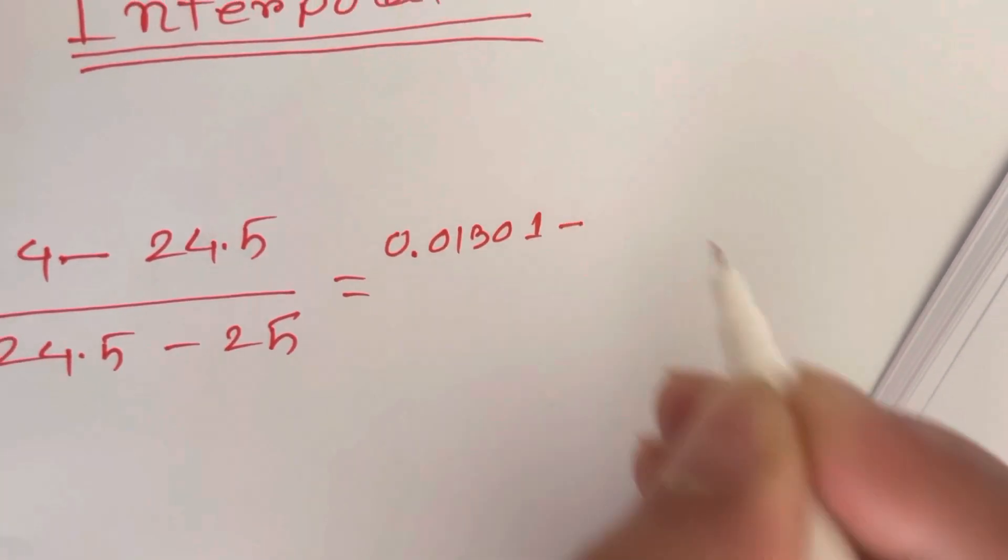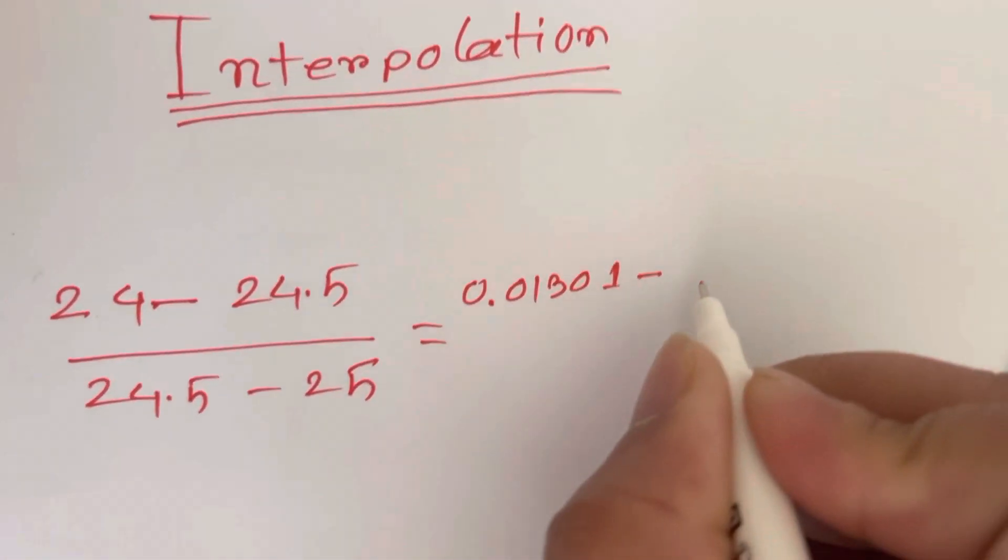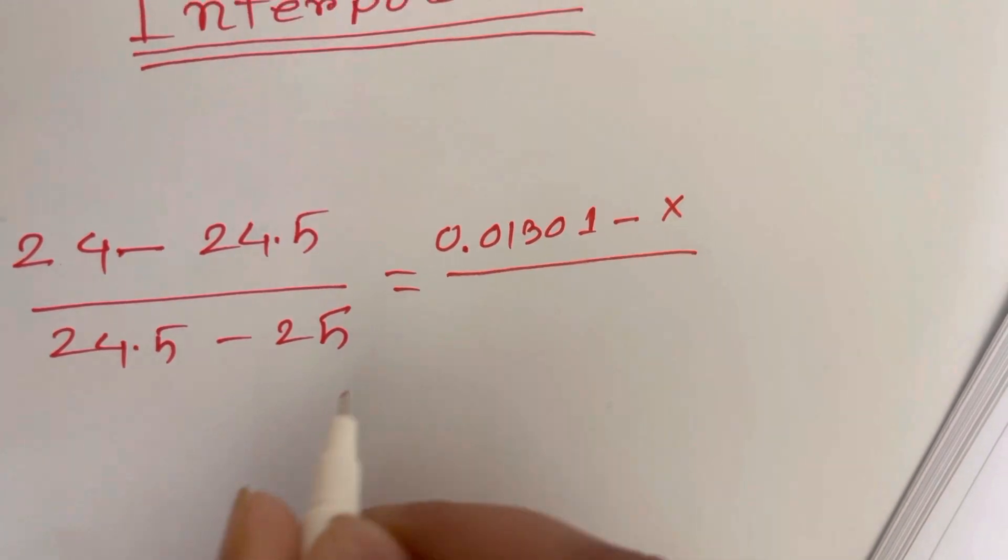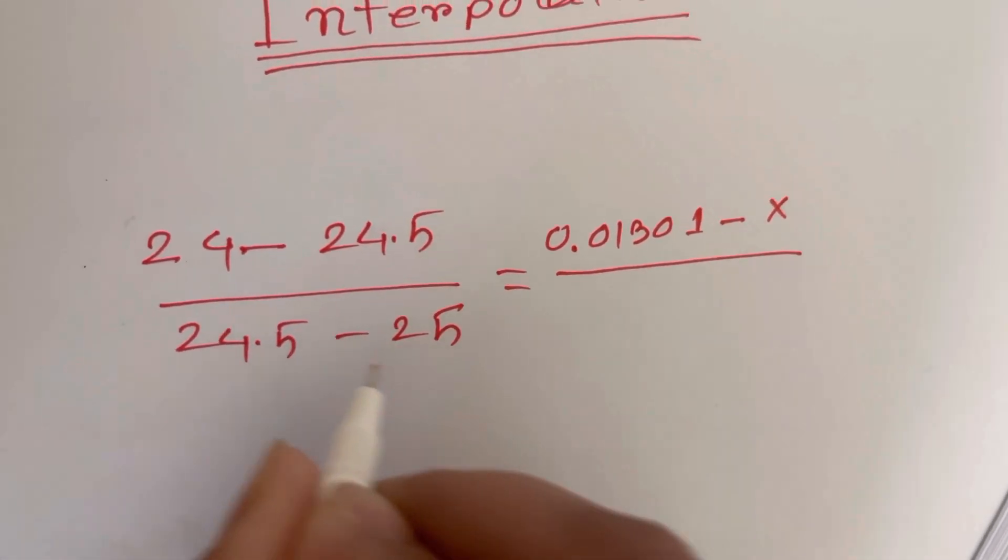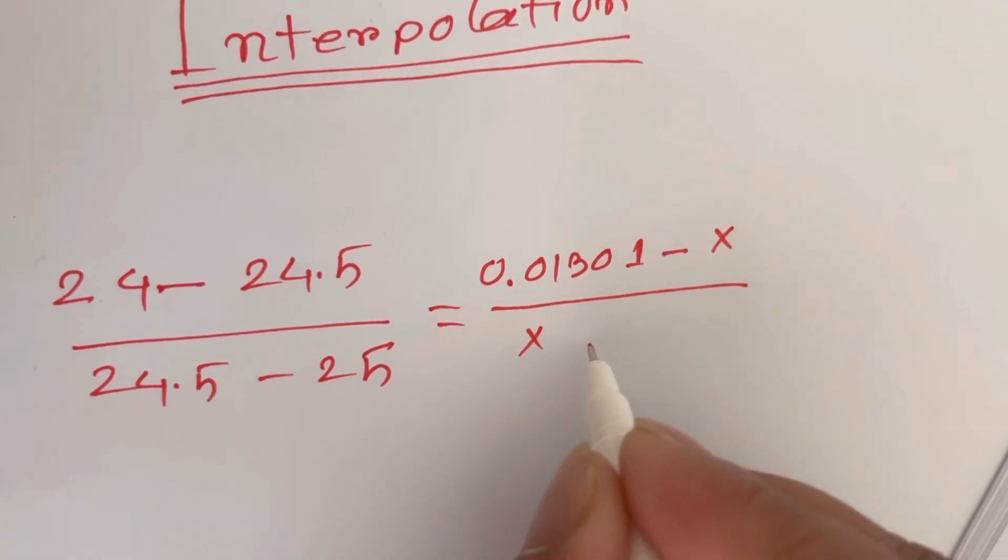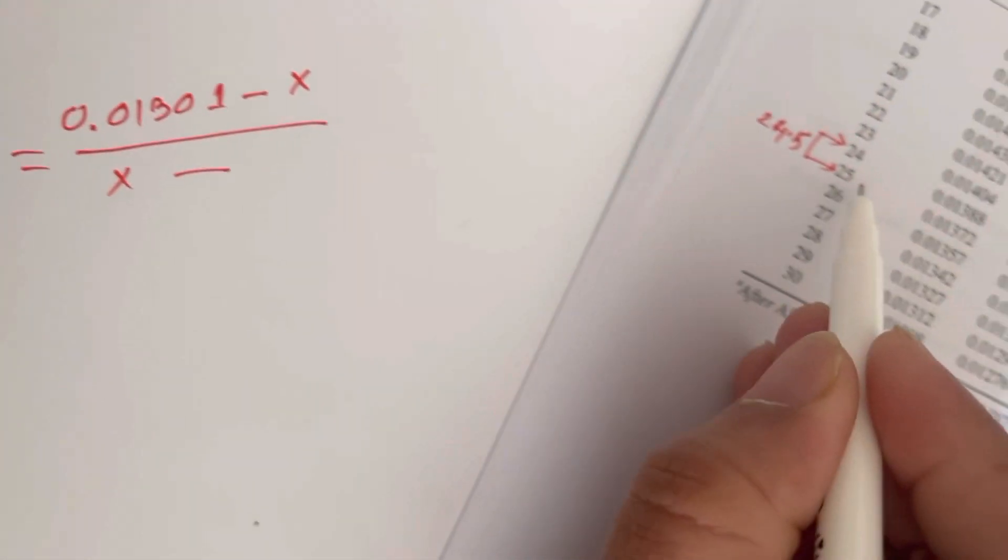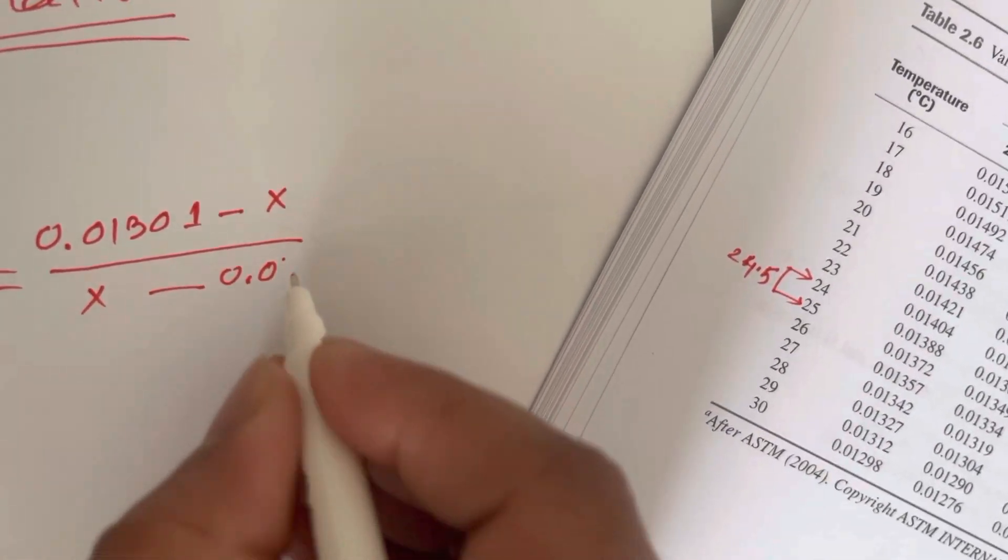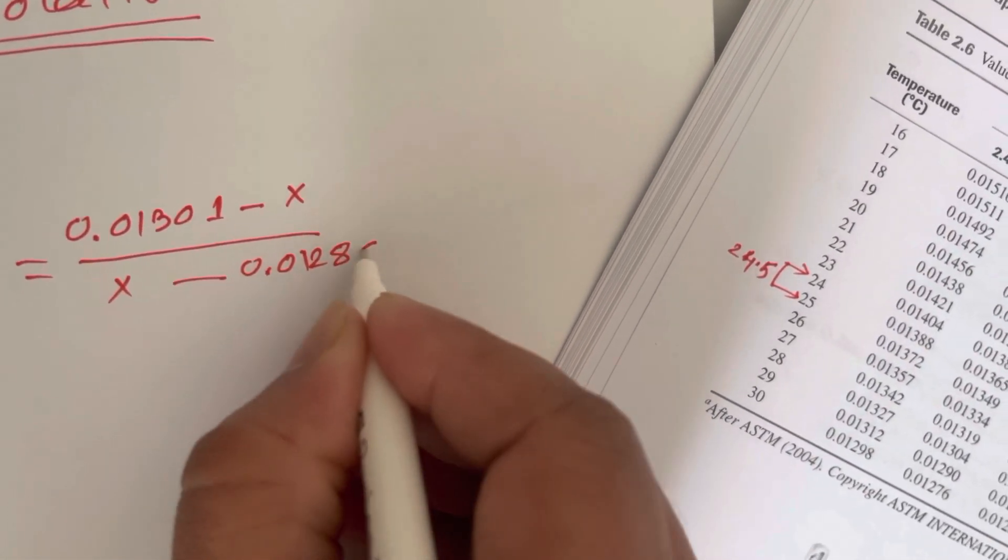And minus for 24.5 we don't know what's the value, we put x here. And then for 25, the corresponding value is 0.01286.